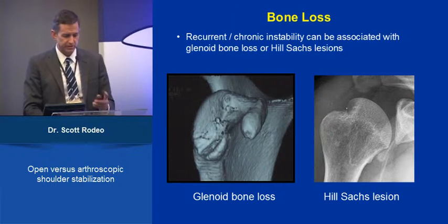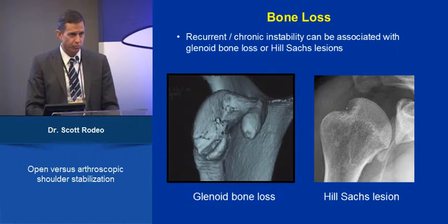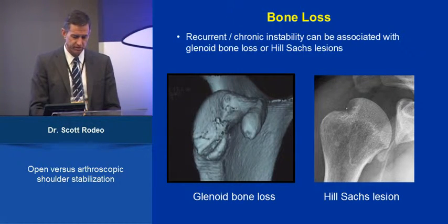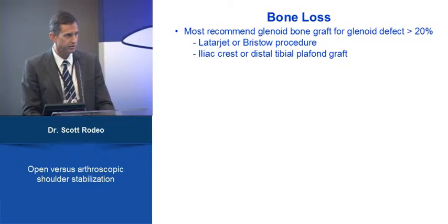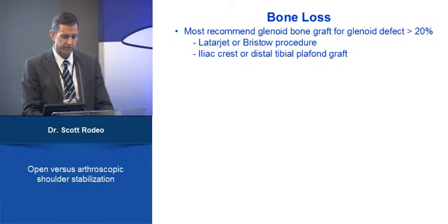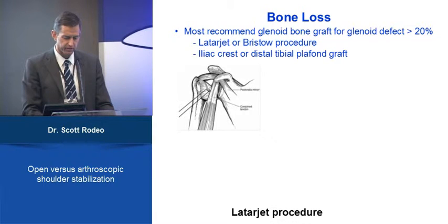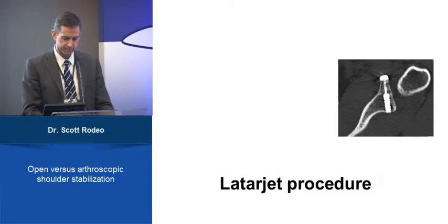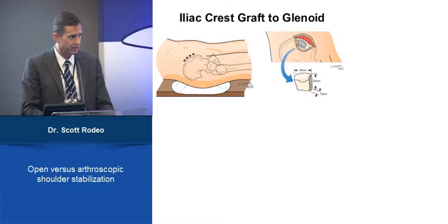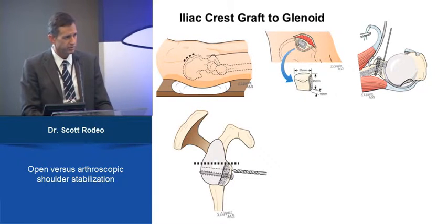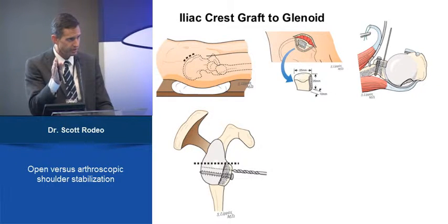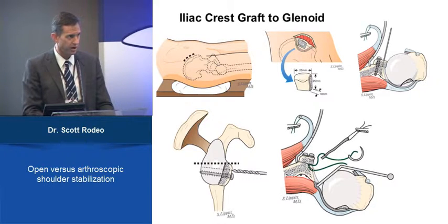Bone loss is certainly an issue. It's important to recognize how bone loss figures into your treatment algorithm — whether glenoid-side bone loss or Hill-Sachs lesions. Glenoid bone grafting is often done via an open approach. Most recommend glenoid bone graft for glenoid defects over 20–25% of the glenoid. Whether that's a Latarjet, iliac crest, or other bone graft, they can all be used effectively. The same basic principles apply: fixing the bone block to the glenoid rim, positioning the graft appropriately relative to the glenoid, secure fixation, and repair of the capsule.